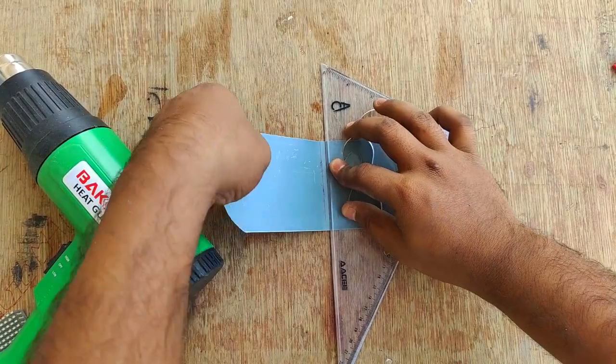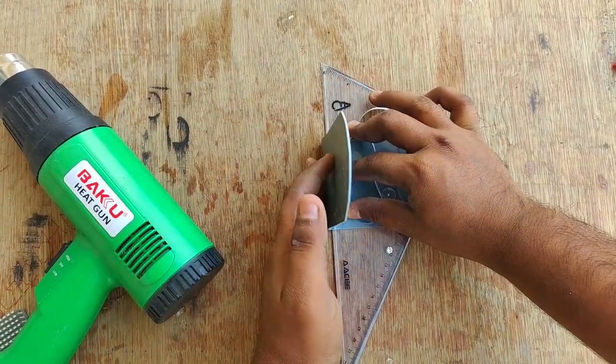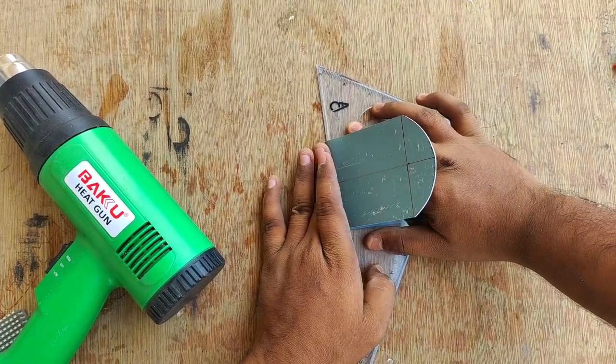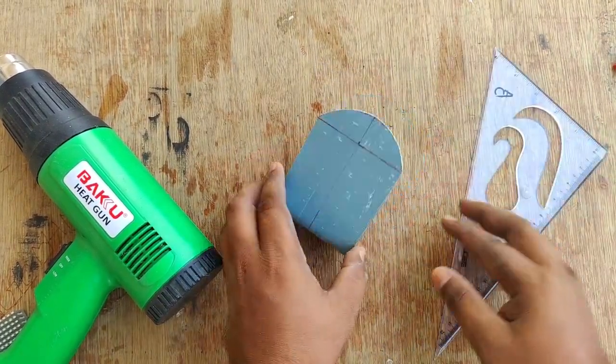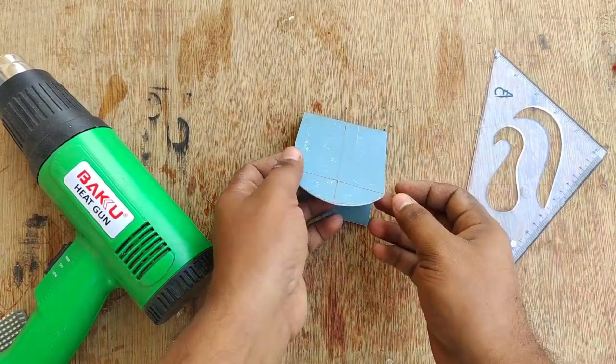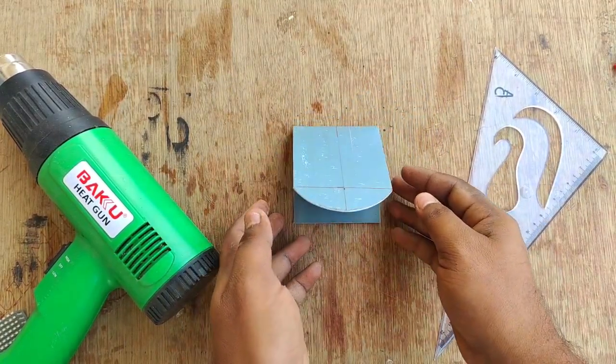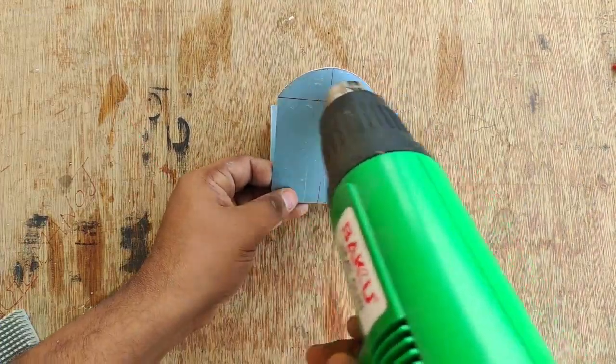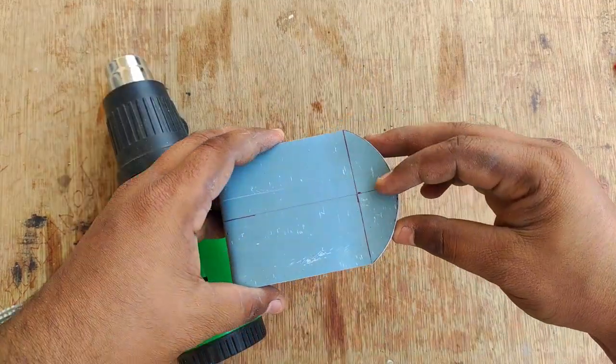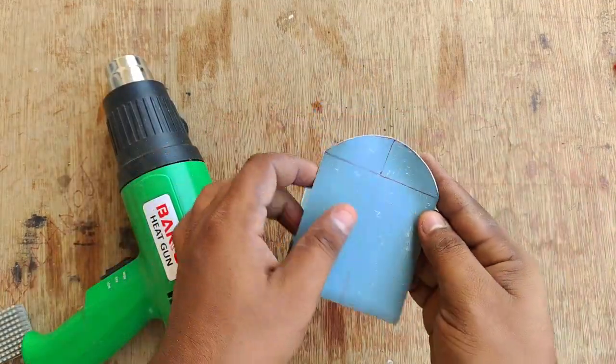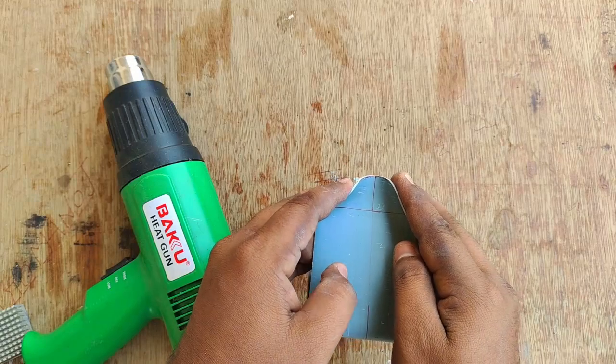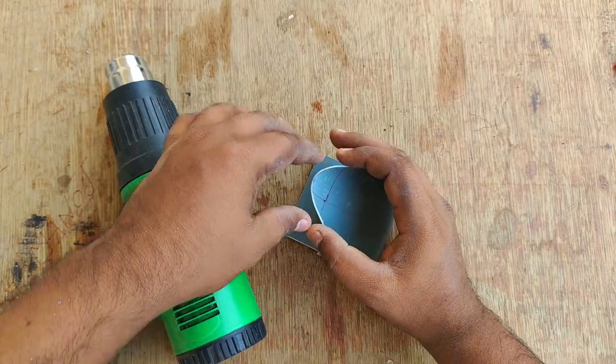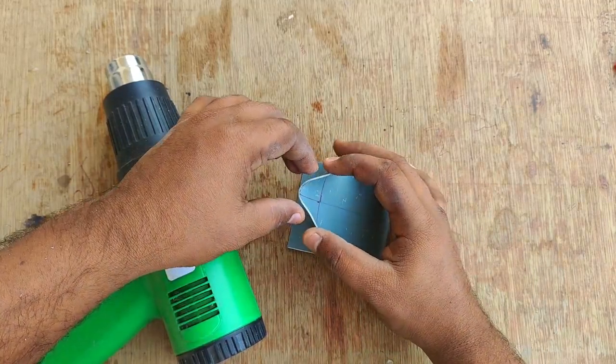We will mark the middle side and bend the side. This is an easy process. We will do this and we will have 2 centimeter sides.